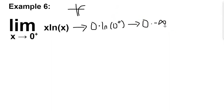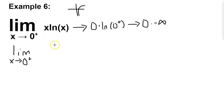This is not 0 over 0 or infinity over infinity, so we have to rewrite this expression to an equivalent one. A common way to rewrite these limits is: if you have a function multiplied by x, instead of multiplying it by x, divide it by 1 over x. So we now have ln of x over 1 over x. These two expressions are equivalent because we're dividing by the reciprocal, so they would evaluate to the same limit.